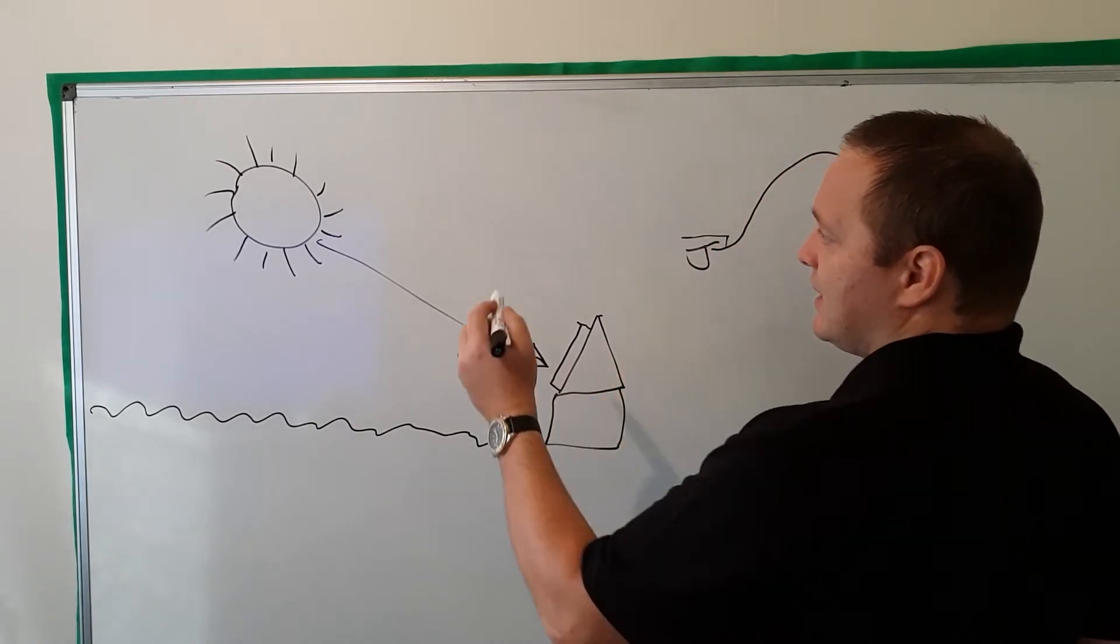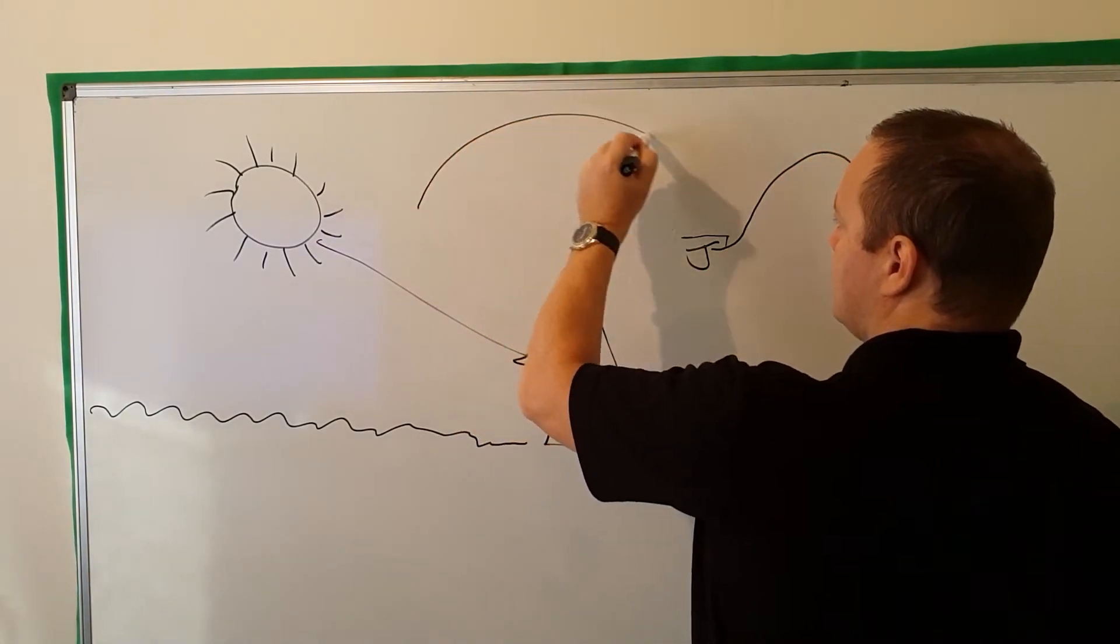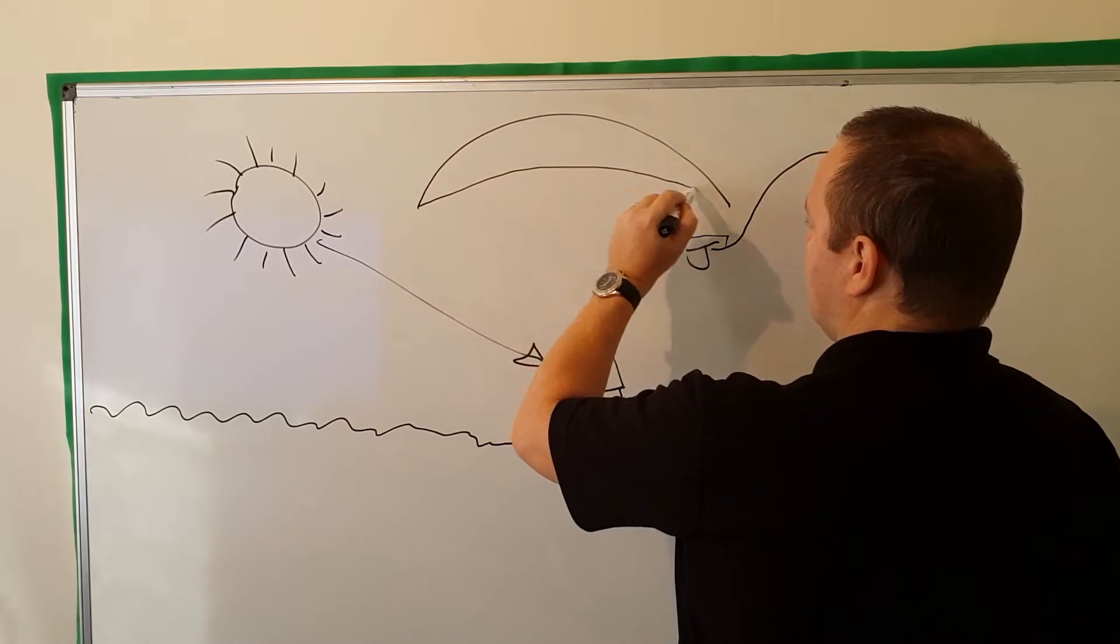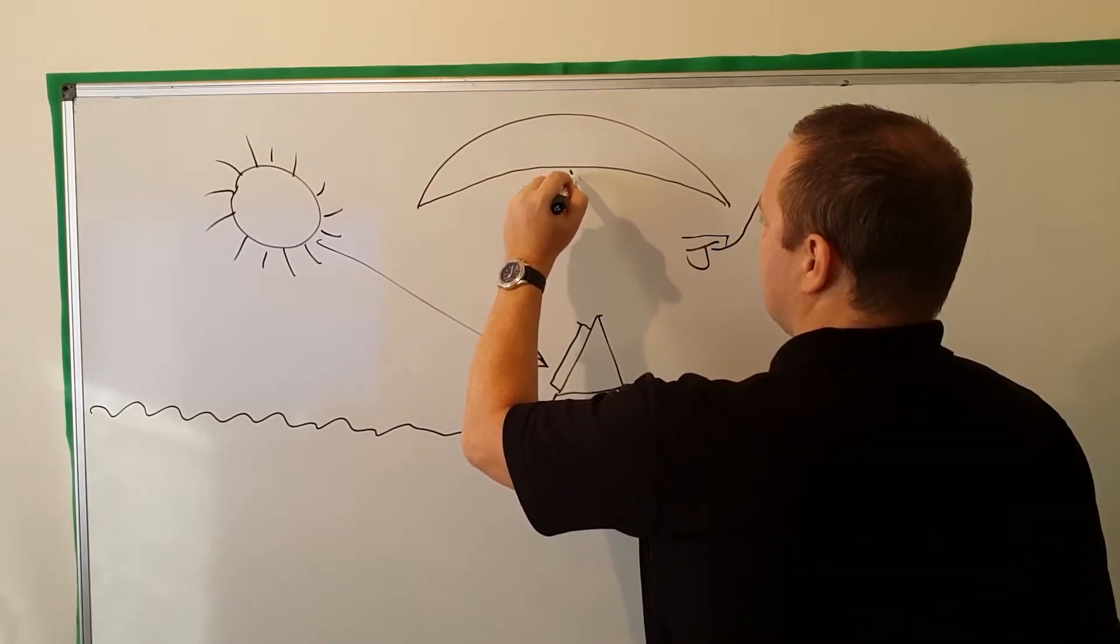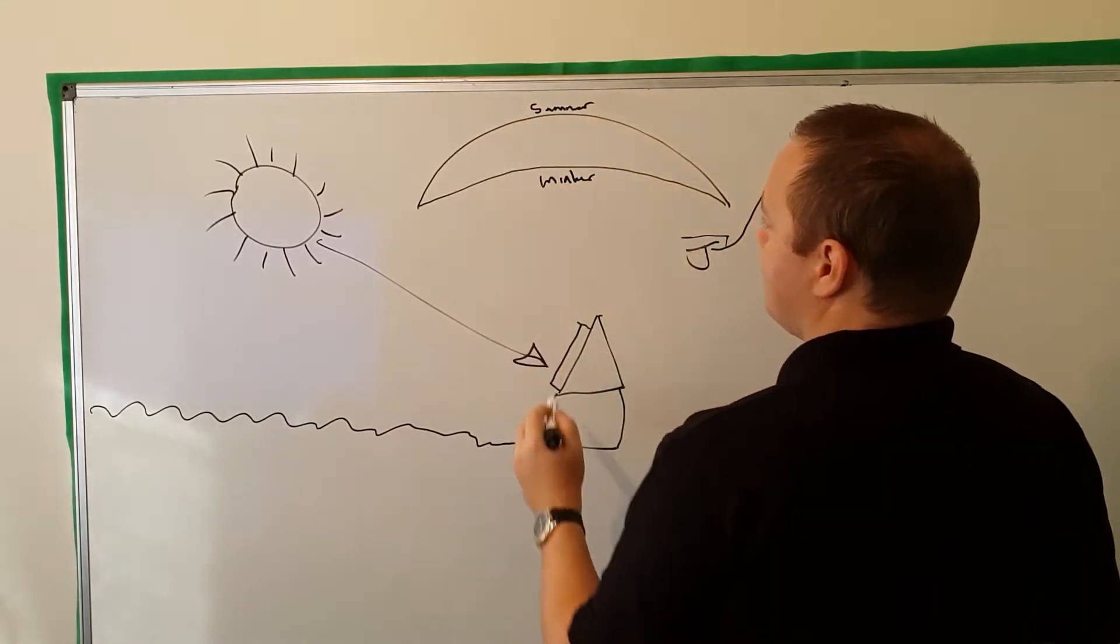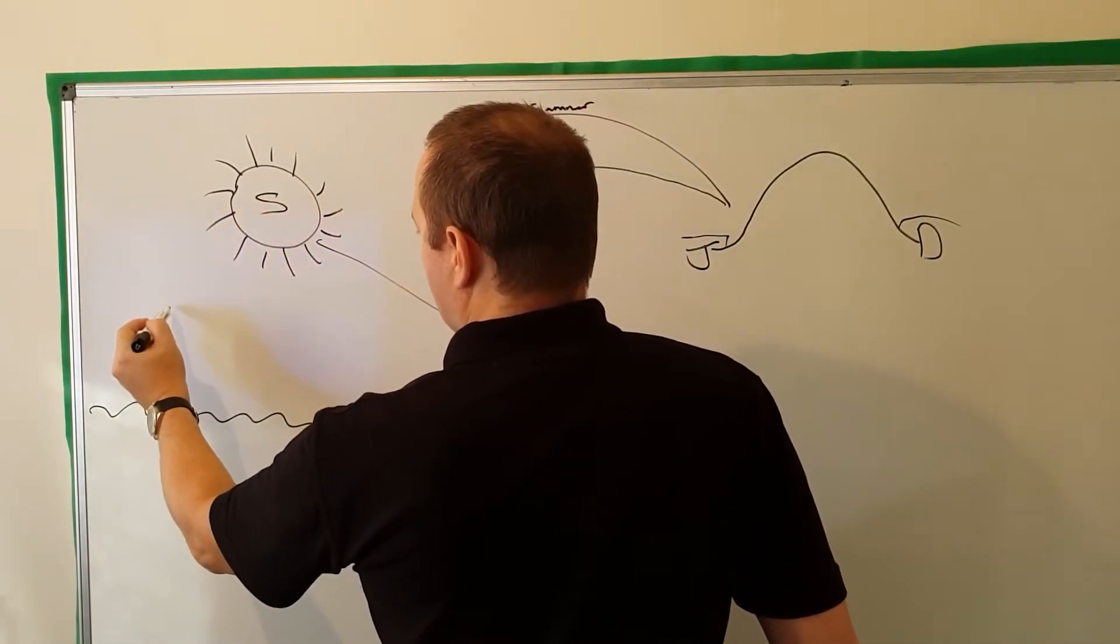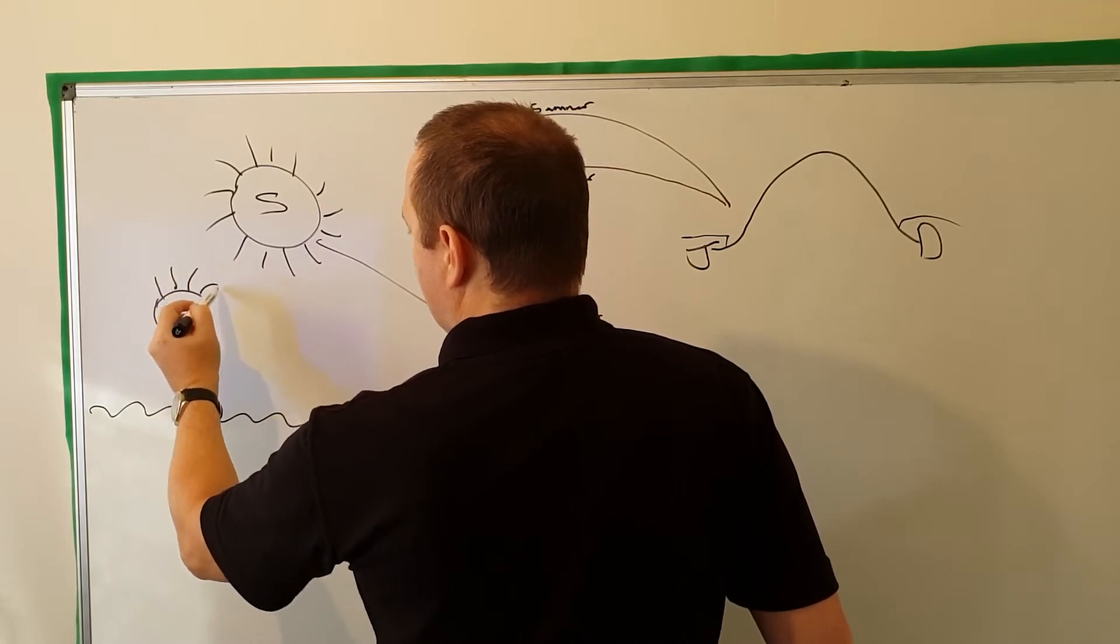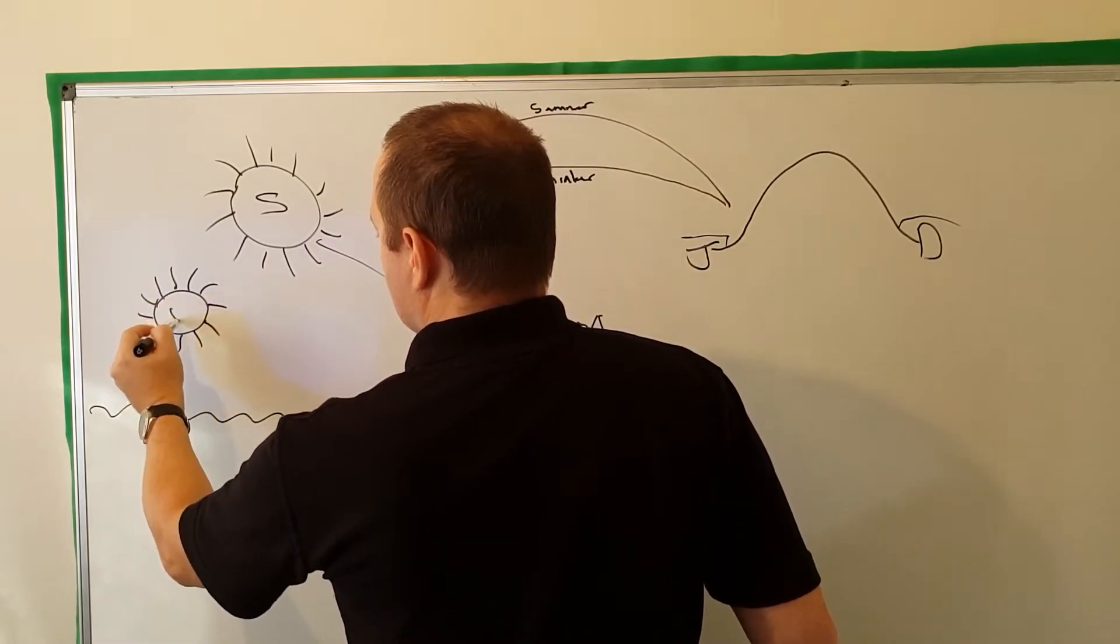So the theory is, obviously in the summer you've got a high arc like that, and in the winter you've got a lower arc. So we'll say that this one's the summer one, and then we'll put the winter one. And I know this is wrong, but you know, it's just going to give you a flavour of how I think it is. So that's the winter.